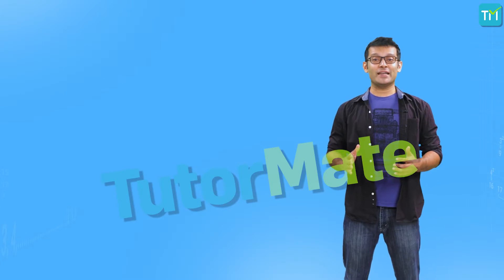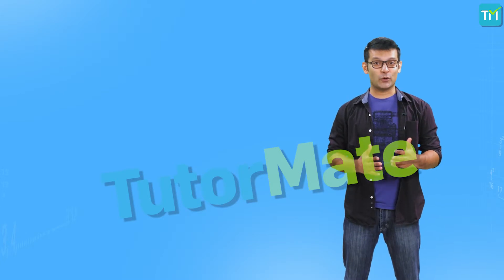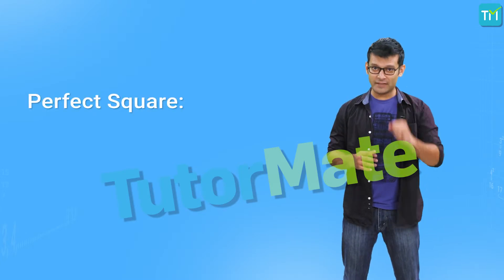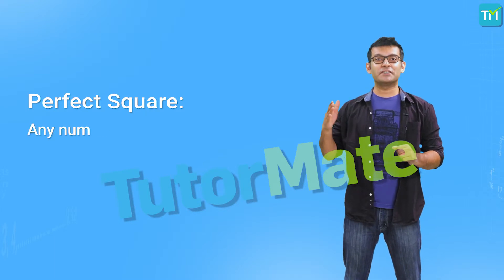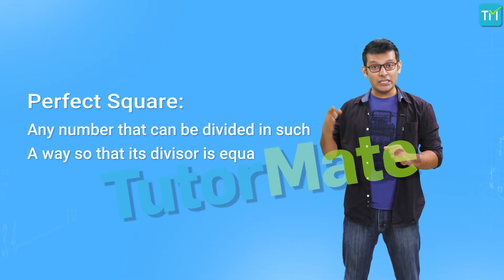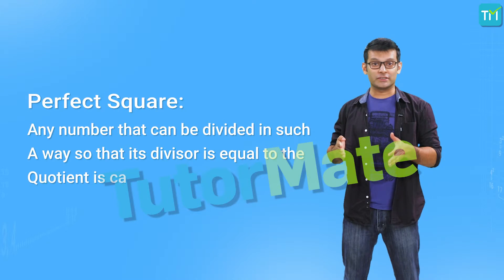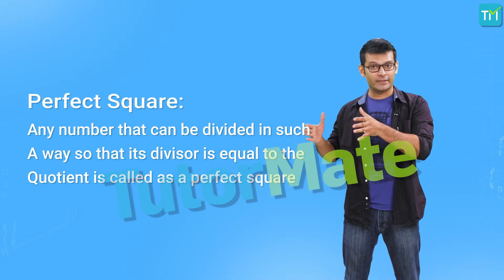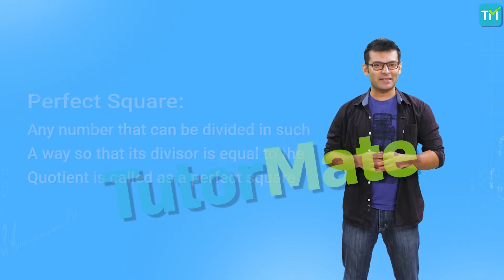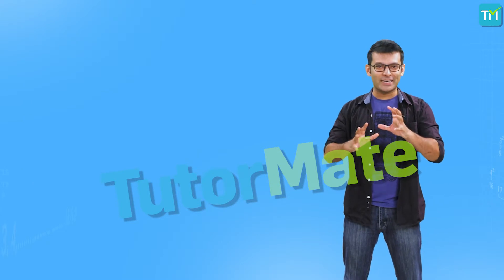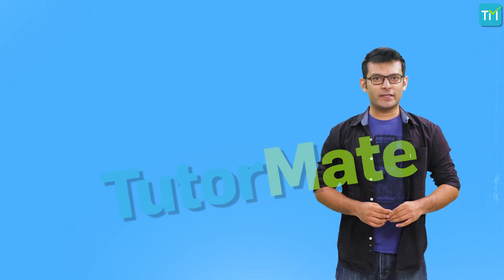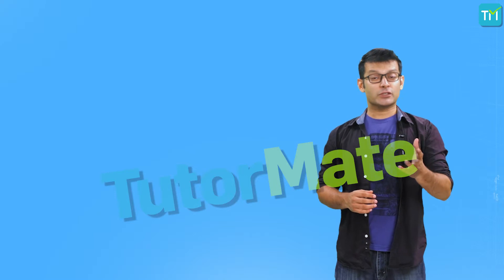Now, these squares that we just saw — they are all perfect squares. By definition, any number that can be divided in such a way so that its divisor is equal to the quotient is called a perfect square. That sounds like a complicated statement, so let's break it down to understand it better. We'll take a perfect square that we know, say 25.